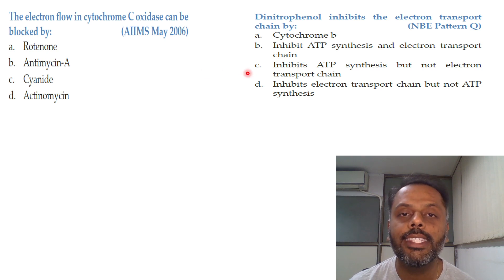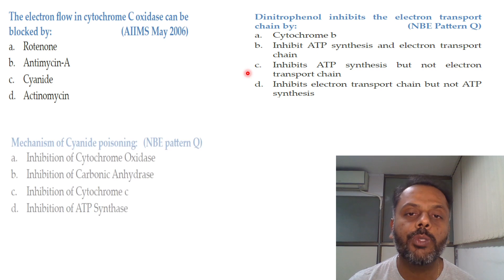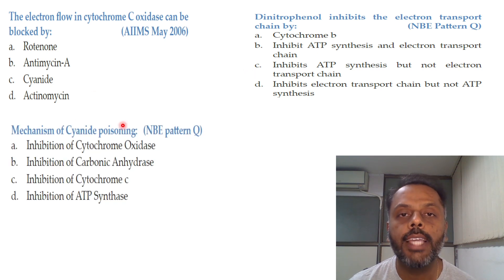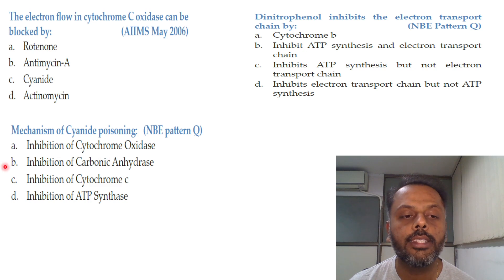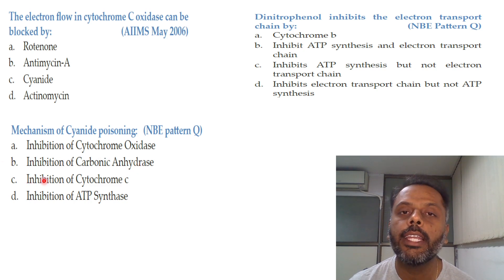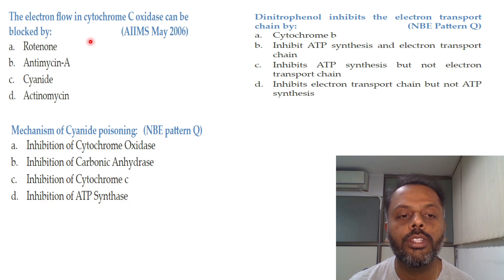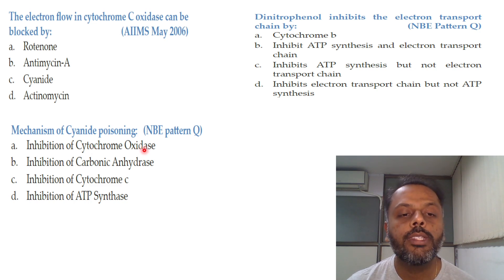The last question: the mechanism of cyanide poisoning — options are inhibition of cytochrome oxidase, inhibition of carbonic anhydrase, inhibition of cytochrome C, or inhibition of ATP synthase. The mechanism of cyanide poisoning is by inhibiting cytochrome C oxidase, that is complex 4. The correct answer is A.